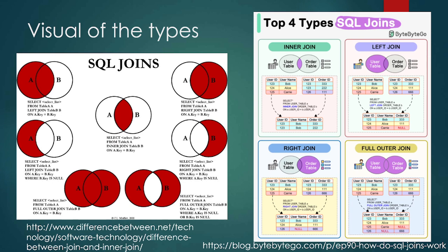The different types of joins give us different information. For a left join, that's going to be the user table and anything that matches on the order table. We select everything from the user table and do a left join with the order table on the user IDs. Carrie has a null result — she was in one table but not the other, so it fills in with null. That's how the left join is put together.